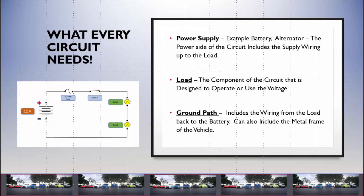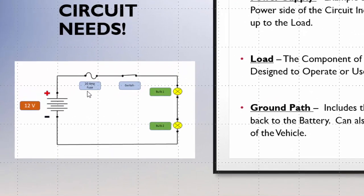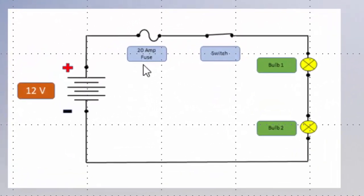In the last video, we talked about the three things that every circuit needs. There's actually two more things that automotive circuits use. They don't need them for the circuit to power up. For example, these bulbs would light if I didn't have a switch and if I didn't have a fuse.